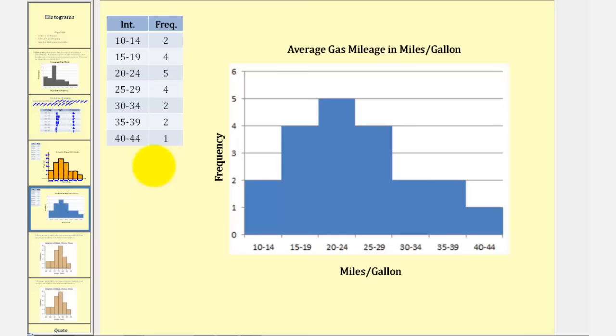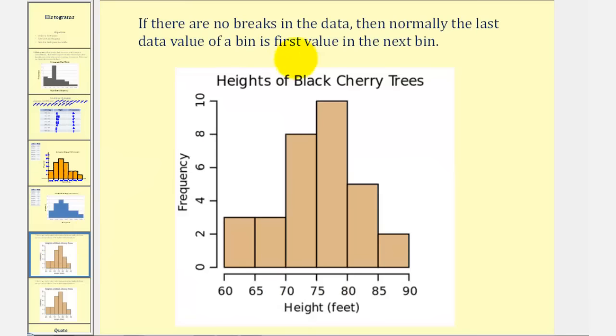There is one more thing I'd like to mention before we go. If there are no breaks in the data, then normally the last data value of a bin is the first value in the next bin. For example, looking at the given histogram on heights of black cherry trees, notice how the horizontal axis is labeled by fives. So this first interval or first bin looks like it goes from sixty to sixty-five, and the second bin or second interval goes from sixty-five to seventy. So the question becomes, where is the sixty-five? Is it in the first bin or is it in the second bin? And it's actually in the second bin.